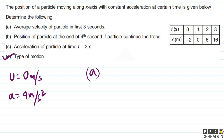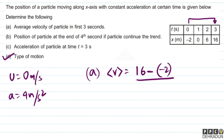Now let's go to Part A: average velocity of the particle in the first 3 seconds. Average velocity = (final position − initial position) / time taken = displacement / 3 seconds. That comes out to (16 + 2) / 3 = 18/3 = 6 m/s.